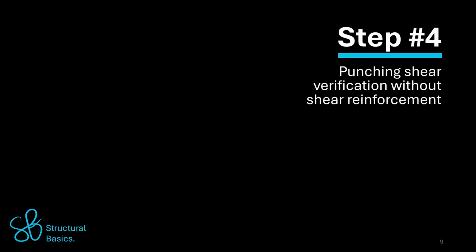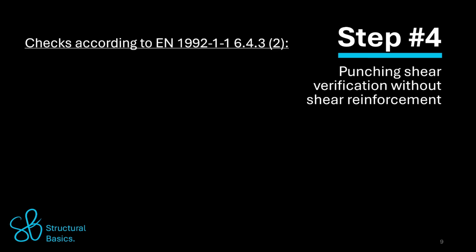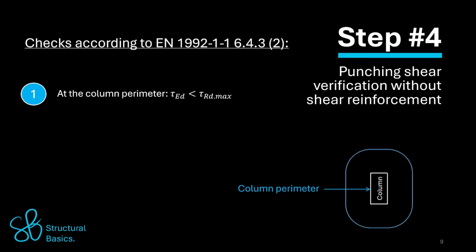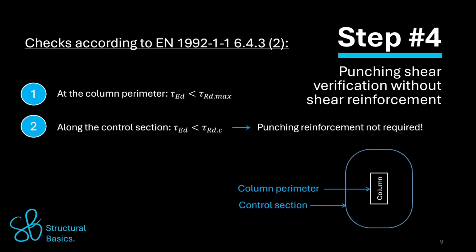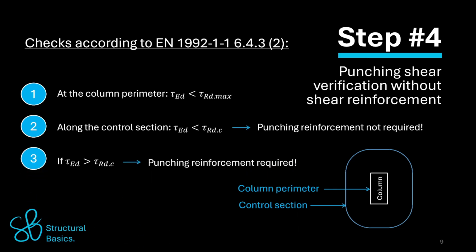Step 4: we'll carry out the punching shear verification without shear reinforcement. According to Eurocode 2, three checks have to be carried out. Check 1: at the perimeter of the loaded area (the column perimeter), the maximum shear resistance stress should not be exceeded. Check 2: punching shear reinforcement is not required if the shear stress does not exceed the punching shear resistance without punching reinforcement along the control section. Check 3: if the shear stress is greater than the punching shear resistance without punching shear reinforcement, punching reinforcement must be added and verified.